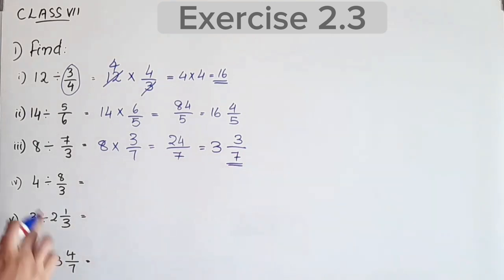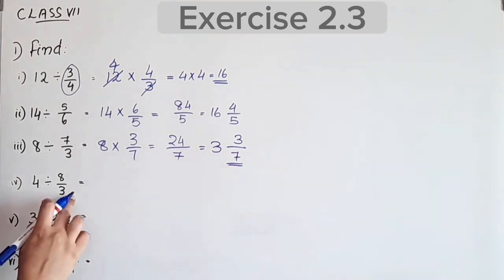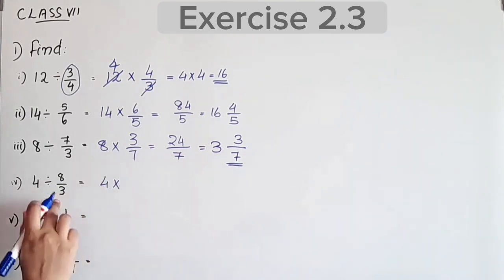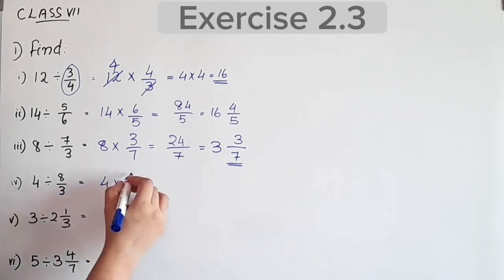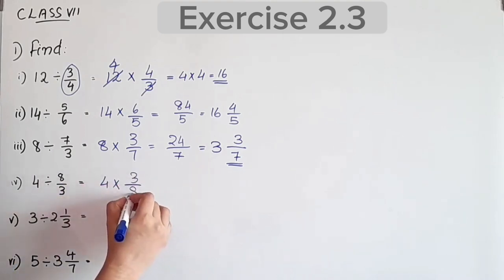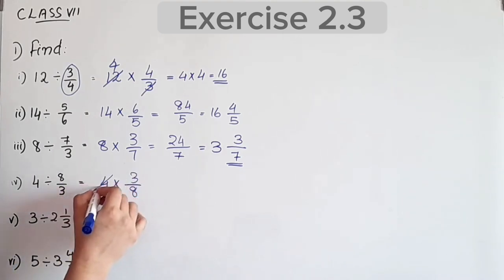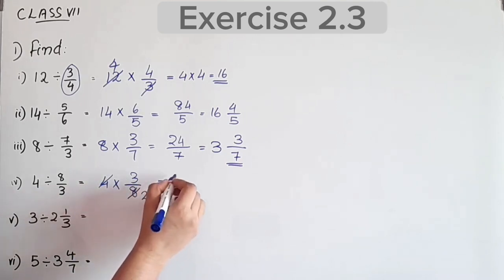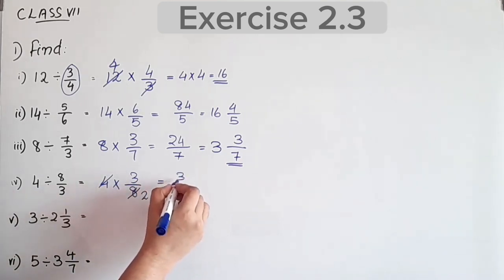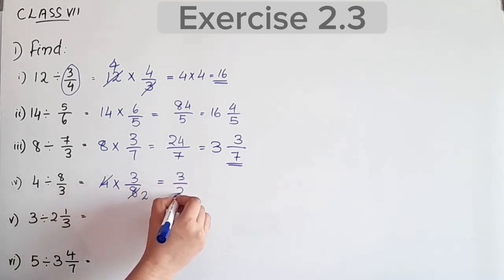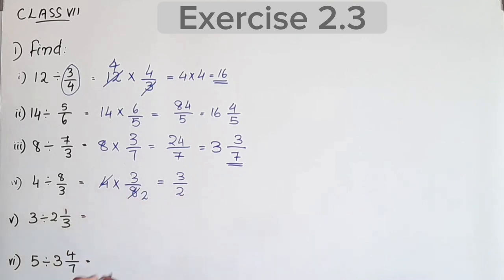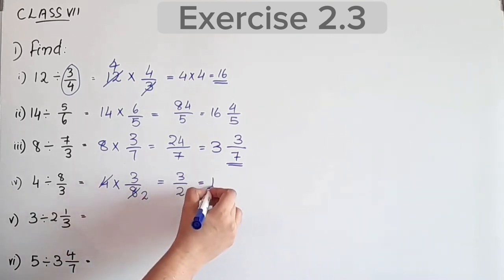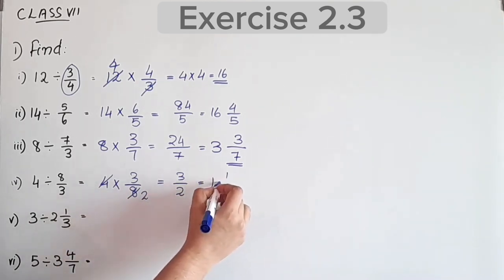Next question: 4 divided by 8/3. Take reciprocal of 8/3, which is 3/8. 4 into 3/8: we get 3/2, which equals 1 remainder 1.